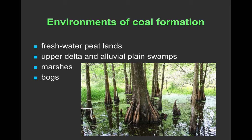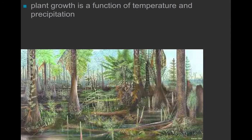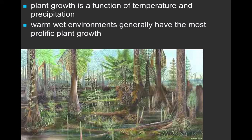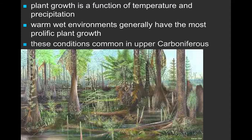You'll notice that these environments all have a couple of things in common: firstly, plant material in abundance, and secondly, a lot of water — not only for the plants to grow, but also to bury the plants rapidly after they die. If we have higher temperatures and high precipitation, such as around the equator, we can get a large amount of plant growth. These warm, wet environments generally have the most prolific plant growth, and it's there in a band around the earth that we find the coal-bearing environments of the upper Carboniferous.